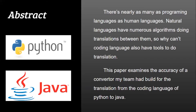Let's go to the abstract. There are nearly as many programming languages in this world as human languages, but the conversion between computer languages is still a developing field. There are comprehensive translations between all human languages, but not many for programming languages. The solution is hidden in the coding itself — we need an algorithm built to convert the source code of one language to another. This paper examines the accuracy of a converter our team built for the translation from Python to Java.